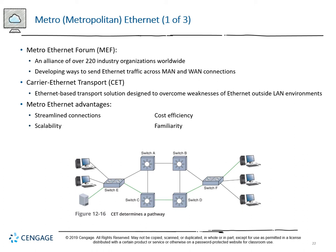Metropolitan Ethernet - the Metro Ethernet Forum is an alliance of over 220 world organizations developing ways to send Ethernet traffic across MAN and WAN connections. Carrier Ethernet Transport (CET) is an Ethernet-based transport solution designed to overcome the weaknesses of Ethernet outside of the LAN environment. Ethernet is good for local area connection, but for WAN links you want serial transmission. Metro Ethernet is advantageous for streamlined connections, it's cost efficient, scalable, and has high familiarity since a lot of technology is already built for Ethernet frames.